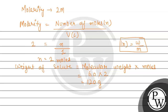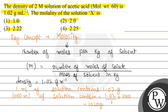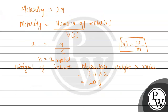The weight of solute comes out to be 120 grams. Previously we found that in 1 liter the total weight is 1020 grams. So the weight of solvent will be 1020 minus 120, which equals 900 grams.